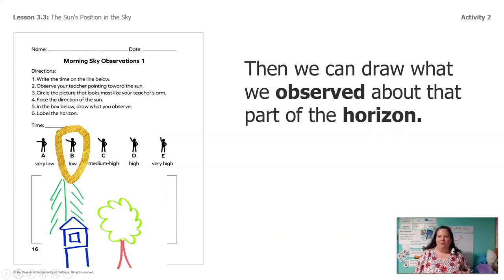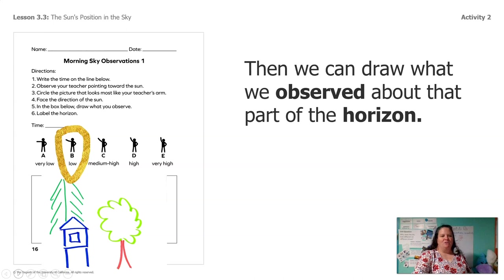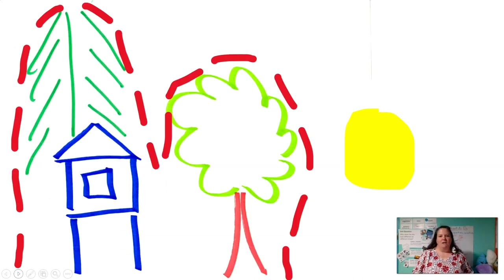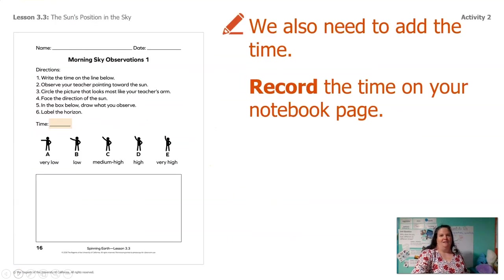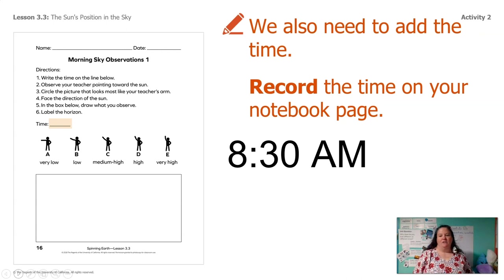We want to draw what we observed — that part of the horizon. I was over by my chicken coop and the tall tree, so I made sure to write down what I observed about the horizon. I'm going to zoom in on that picture because I also wanted to add the sun and the horizon. You can see my red dotted line as the horizon, and there's the sun — that's what I want you to do on your own observations as well. It's also really important that I record the time. When I went out and took that picture it was 8:30 a.m.